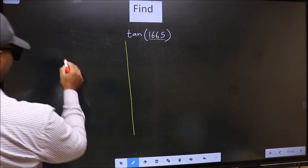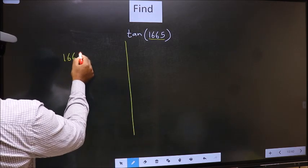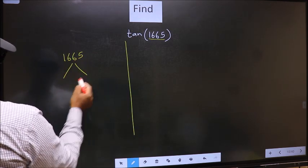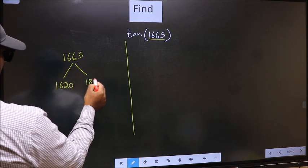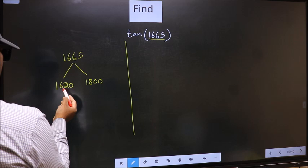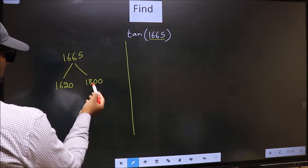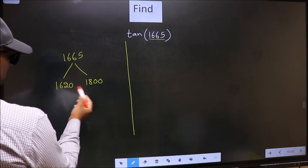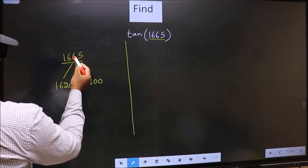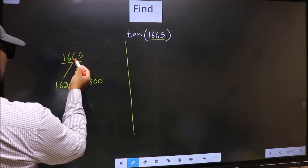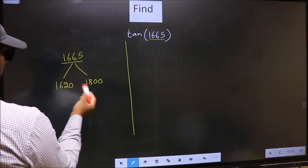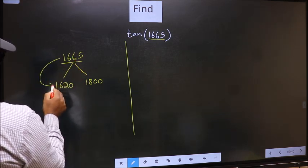1665 lies between 1620 and 1800. This is 180×9 and this is 180×10. Between these two numbers, 1665 lies. Next, 1665 is close to which number? This is close to 1620.